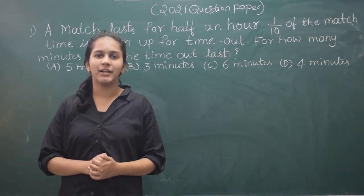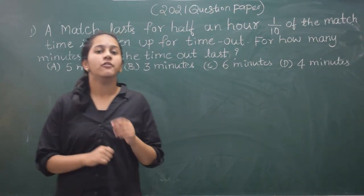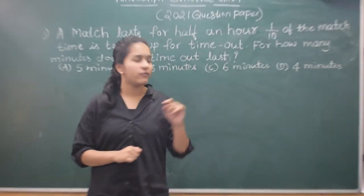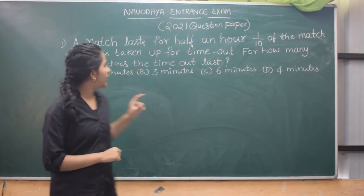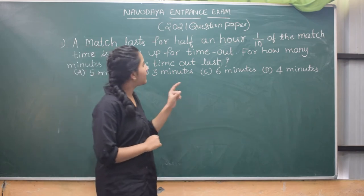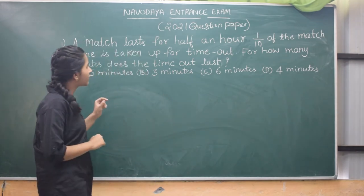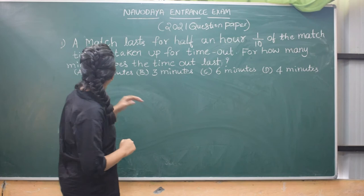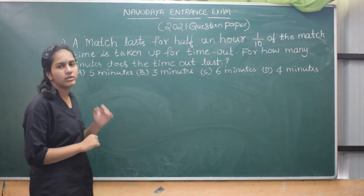Welcome back to Chanikya Multi Talent Academy. Today we are in part 3 of our 2021 question paper. The question is: A match lasts for half an hour. One tenth of the match is taken for time out. For how many minutes does the time out last?